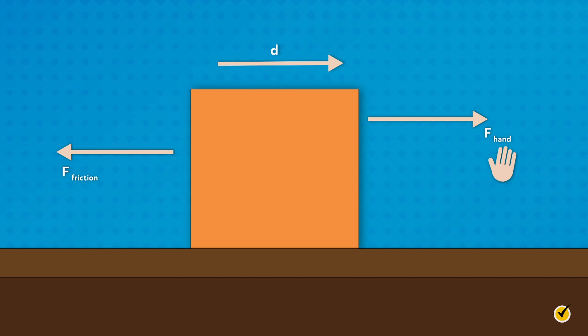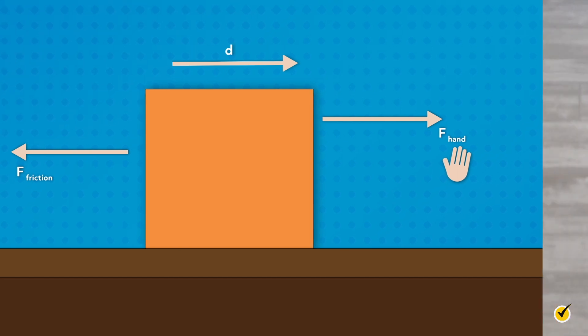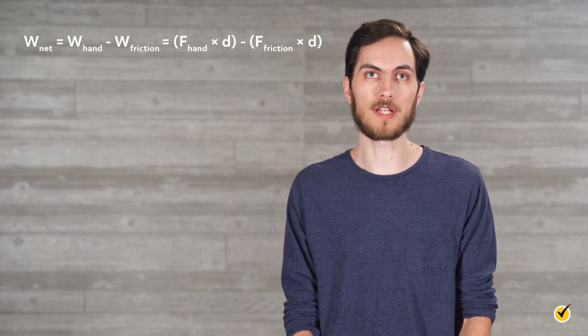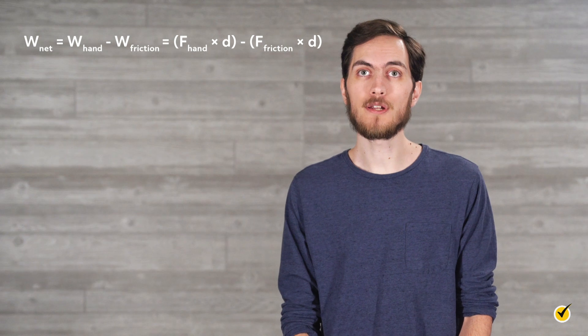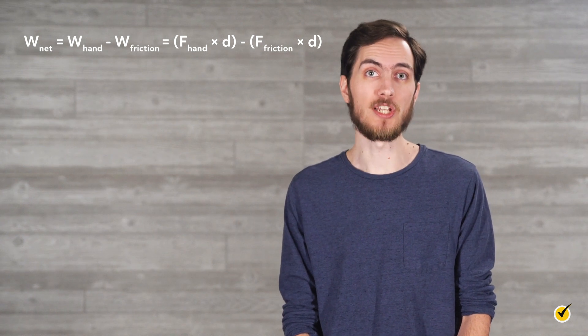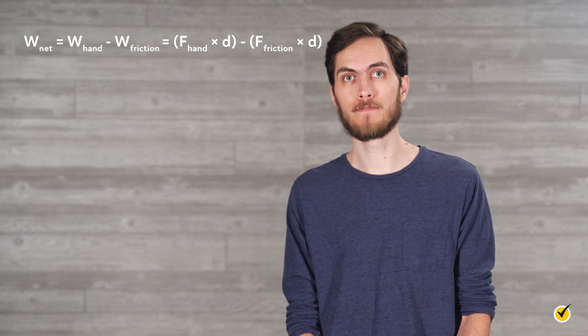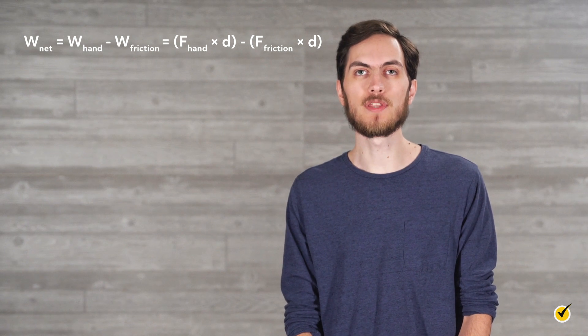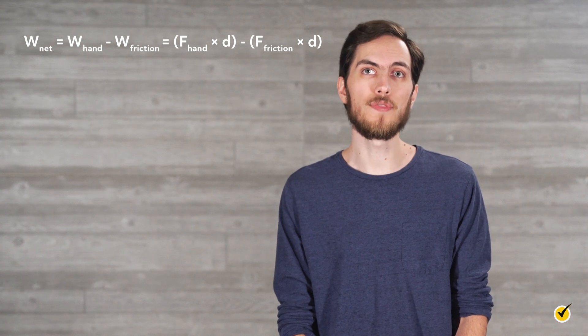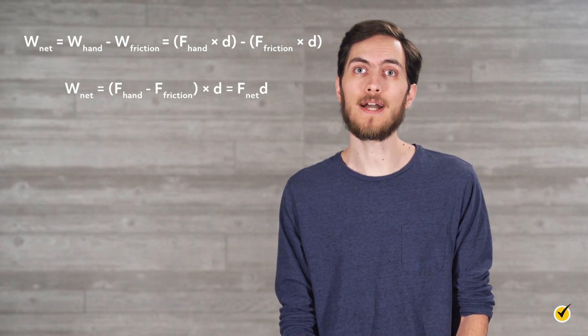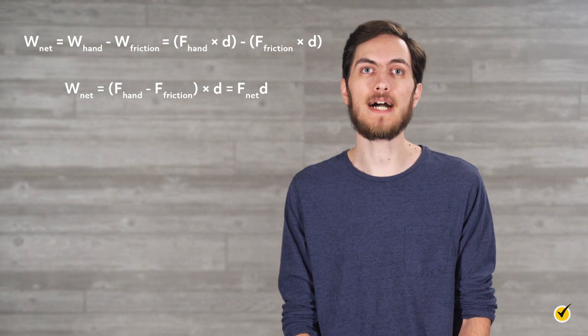It's also important to note that the total or net work done on an object is equal to the net force times the displacement. So in our example, there are two forces, and both must be accounted for to get the net work. The net work is the sum of the work done by your hand and the work done by friction. Remember, the work done by friction is negative, because it is opposite of the direction of the object's motion. Since both forces act over the same distance, the d can be factored out. The sum of the forces is also called the net force. Thus, the net work equals the net force times the displacement.